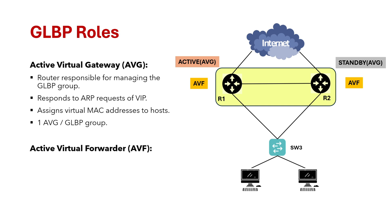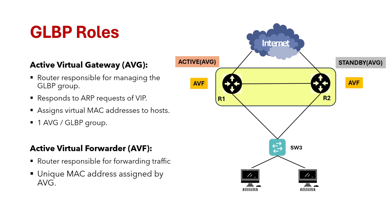The AVG is also responsible for electing the AVFs used during GLBP communication. AVF — Active Virtual Forwarder — is the router responsible for forwarding traffic for a specific group of hosts. These AVFs are selected by the AVG, and each AVF has a unique virtual MAC address assigned by the AVG. For example, AVG assigns MAC address ABCD to R1 and CDEF to R2. You can have up to four active AVFs in a GLBP group.